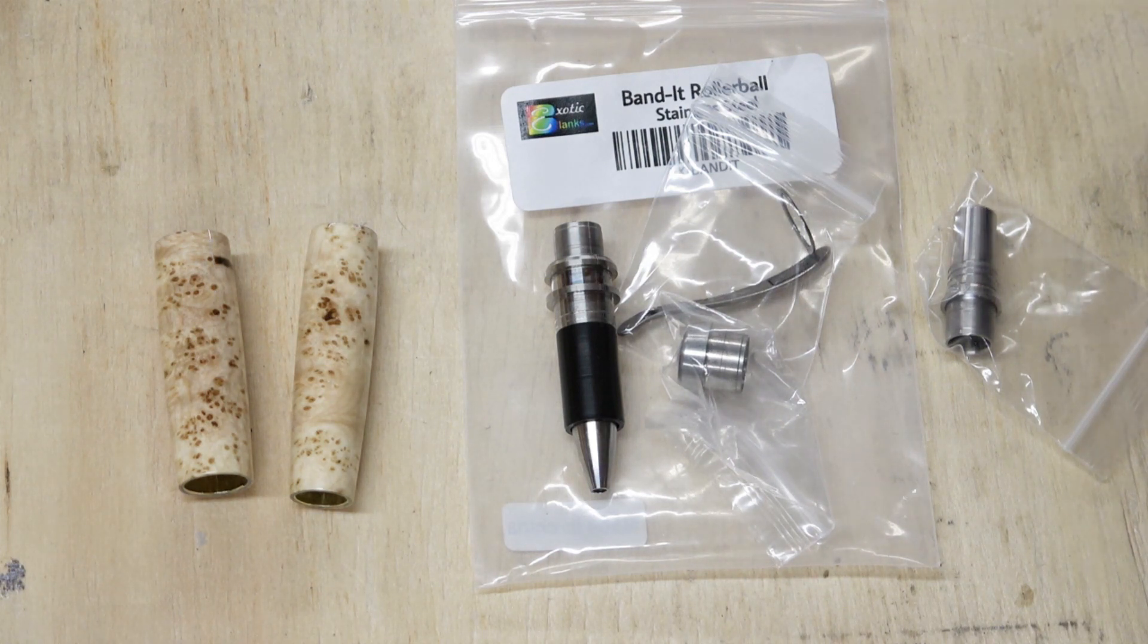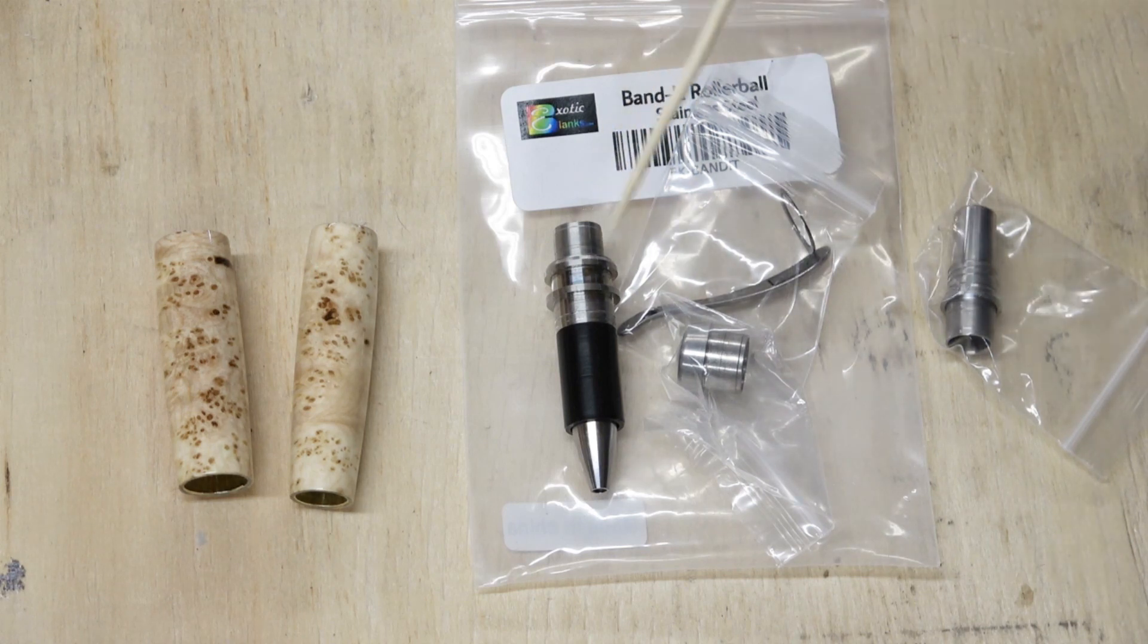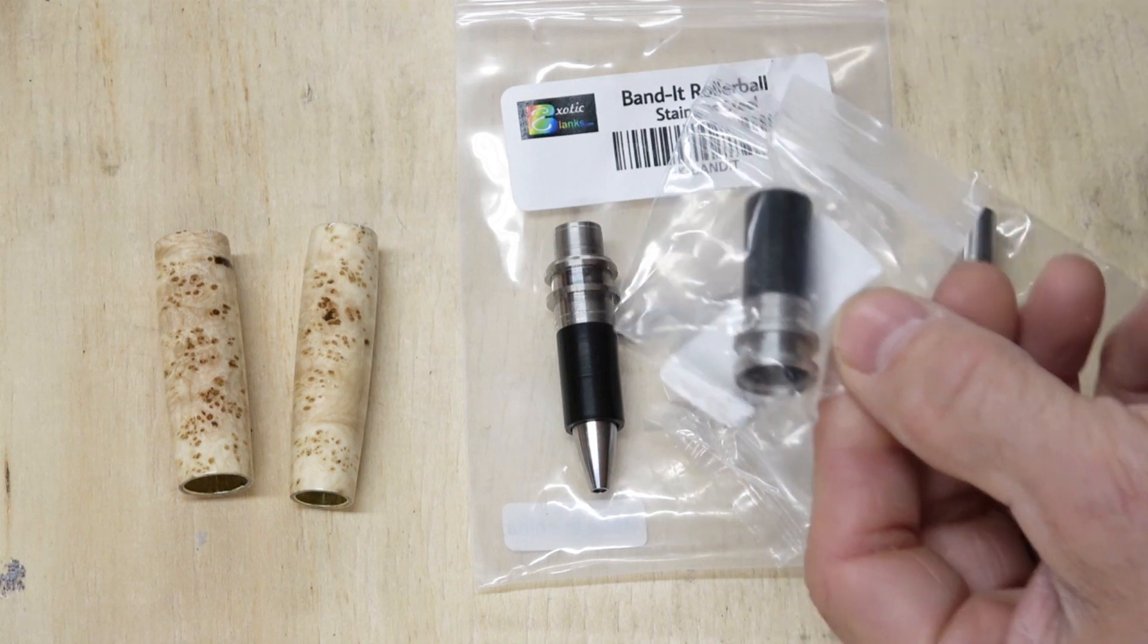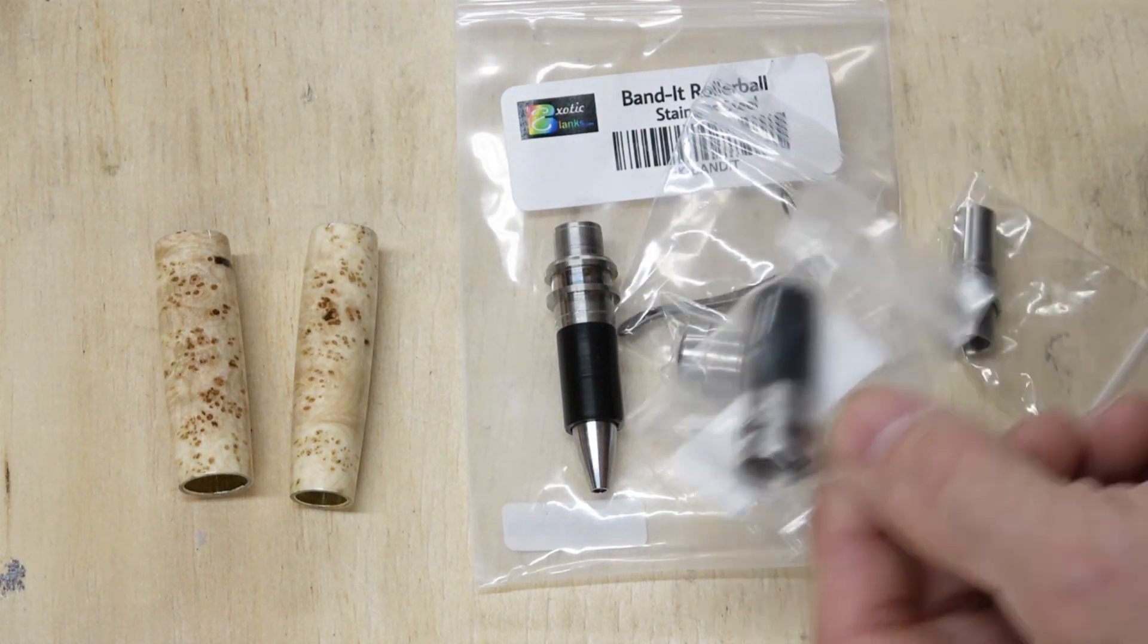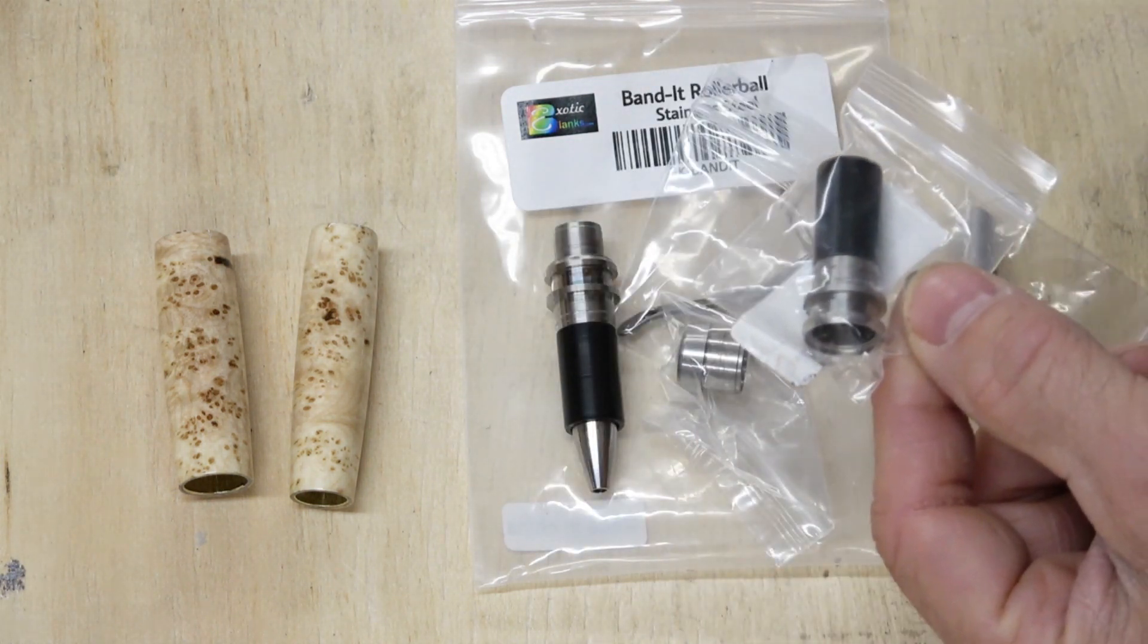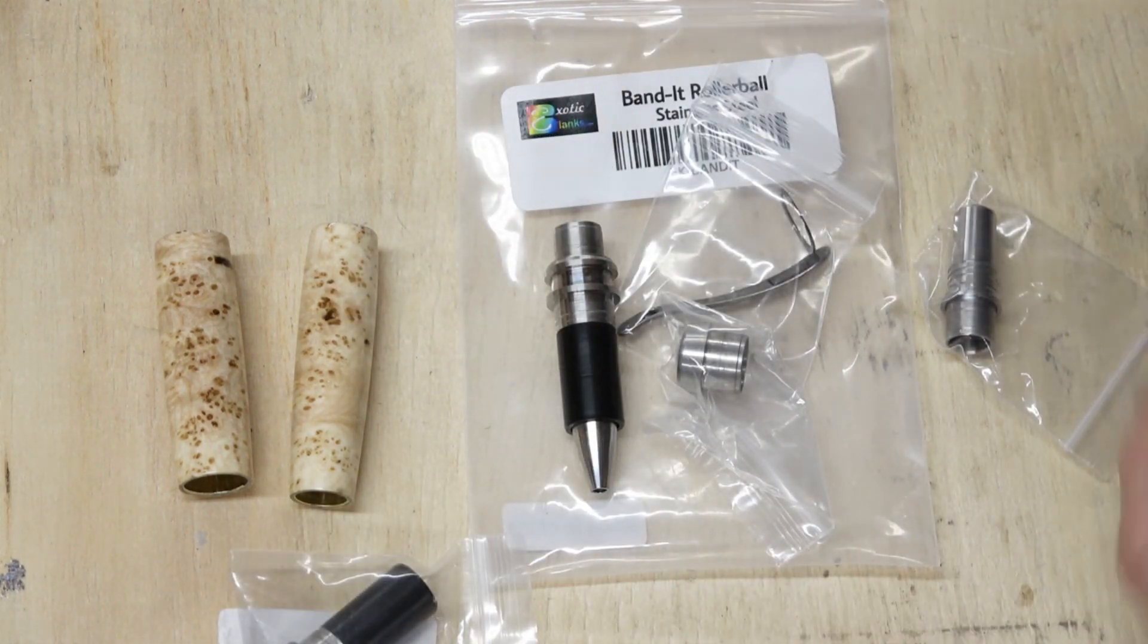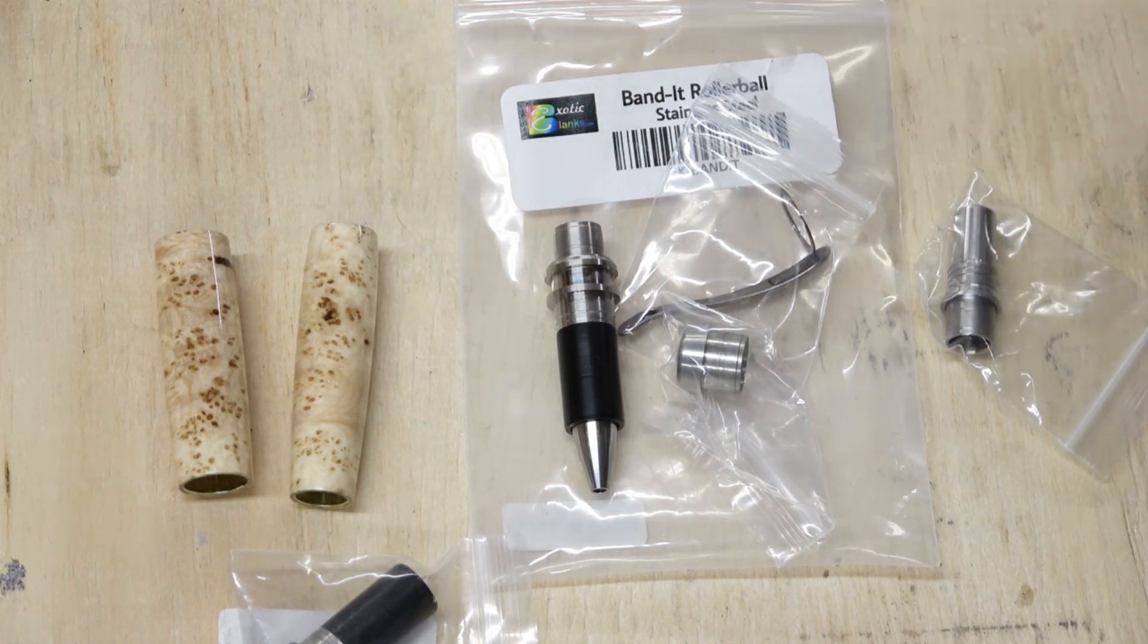So in this video, we're going to focus on the center band. And the nice thing about this center band set is you can buy extras at exoticblanks. So if you want to make something and then after you get it done, you realize it's just not the look I was going for, you can set it aside and then make another one, and you've got that other one for later.